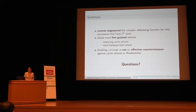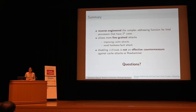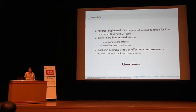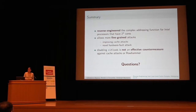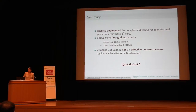In summary: we reverse-engineered the complex addressing function for Intel processors with power-of-two core counts. This enables more fine-grained cache attacks, in particular improving cache attacks and demonstrating a novel hardware fault attack. One proposed countermeasure was to disable the CLFlush instruction, but this is not effective — either for cache attacks or Rowhammer — because using this eviction function, we can still evict lines from the target's caches without CLFlush. This concludes the talk.